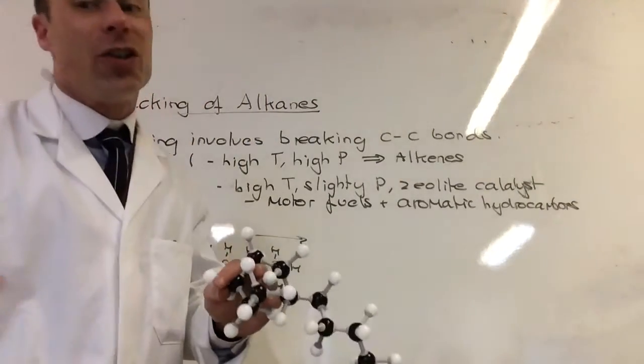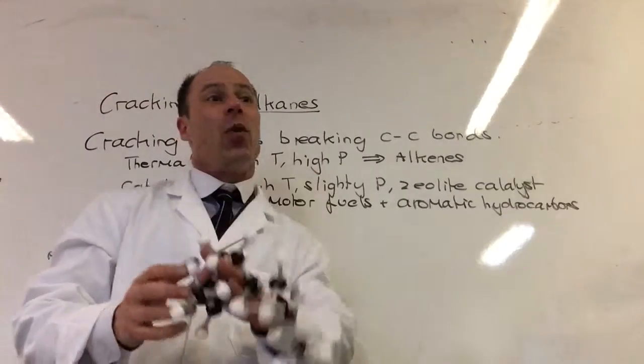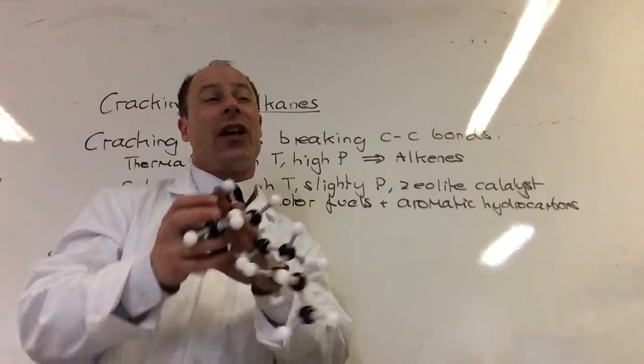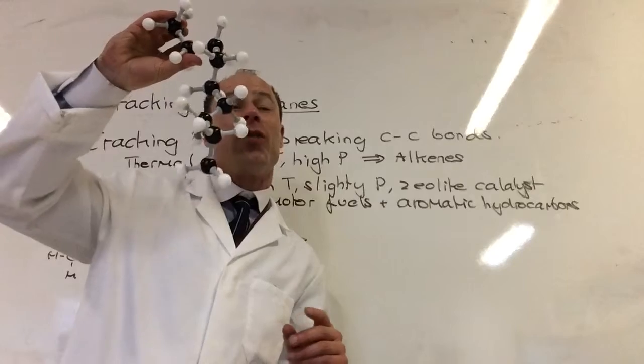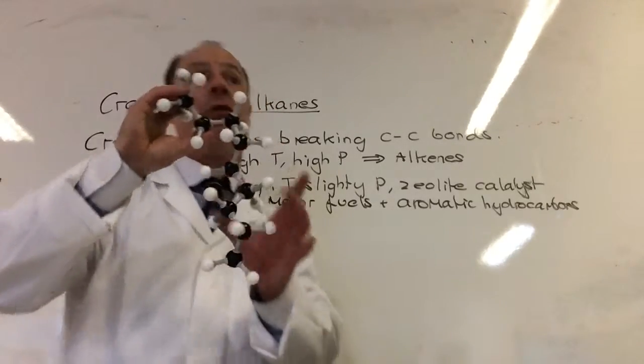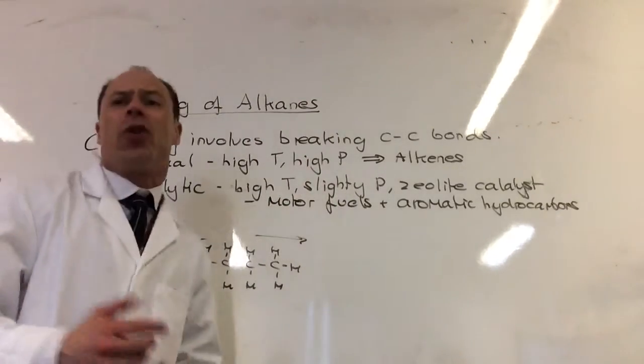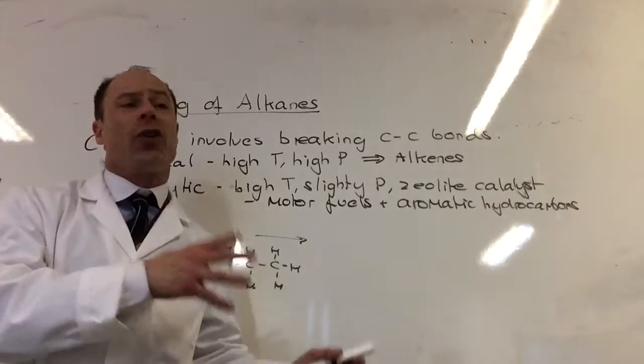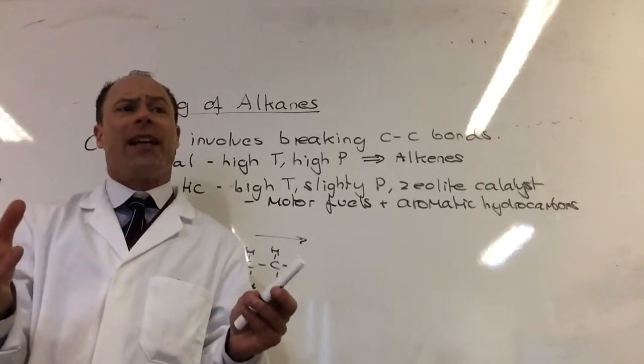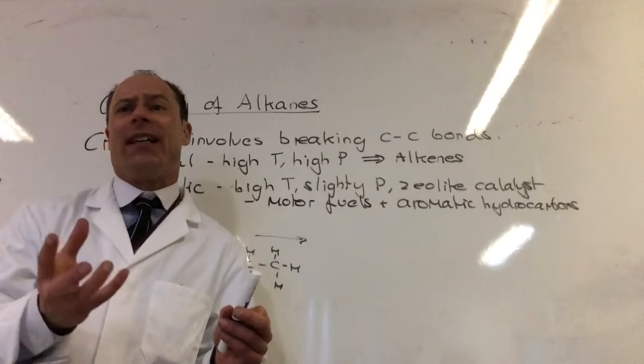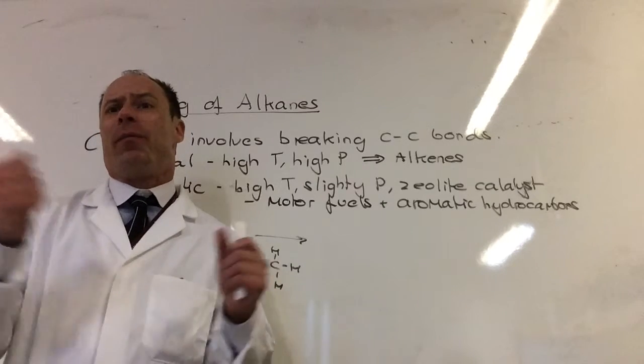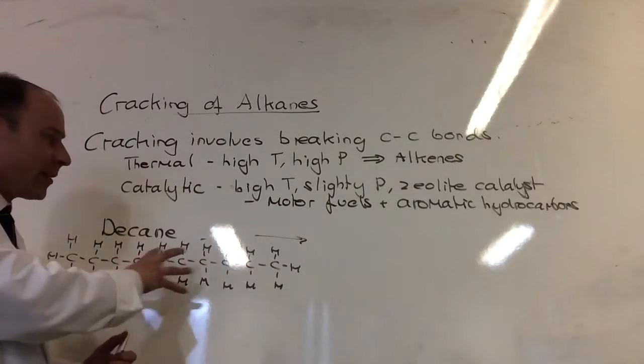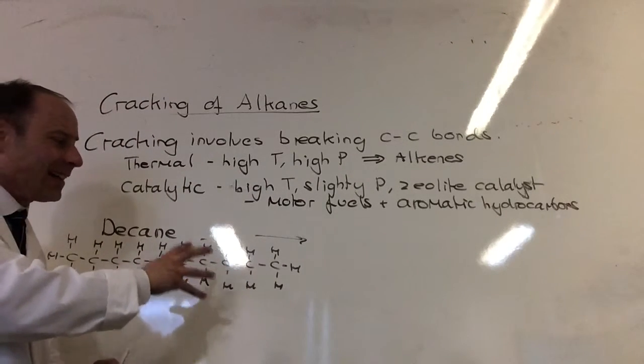So what I'd like you to do is break one of your carbon-carbon bonds and try and create two new molecules where every carbon has four bonds with it. So what you would have found is when you've broken those two molecules, when you've broken that molecule apart, you have to create an alkene as part of that to make sure you can't add anything.